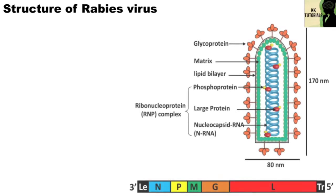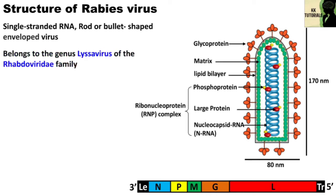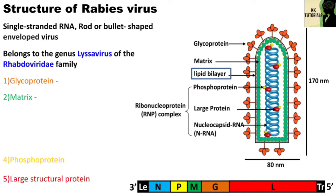This is how the rabies virus looks like. Rabies virus is a rod or bullet-shaped enveloped virus. It belongs to the genus Lyssavirus of the Rhabdoviridae family. Here you can see a lipid bilayer. All rhabdoviruses encode five structural proteins: glycoprotein, matrix, phosphoprotein, large structural protein, and nucleoprotein. There are glycosylated G-protein spikes embedded in the lipid membrane.